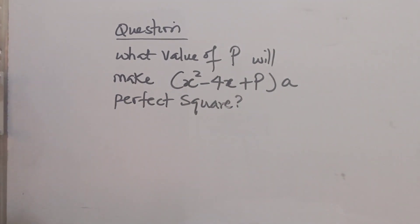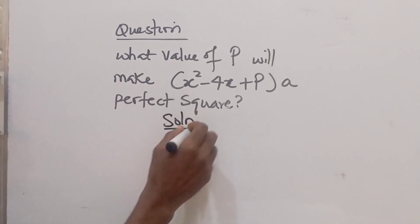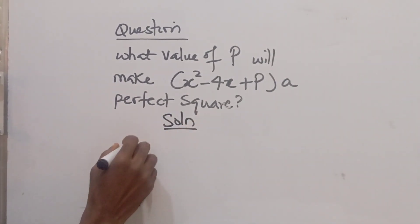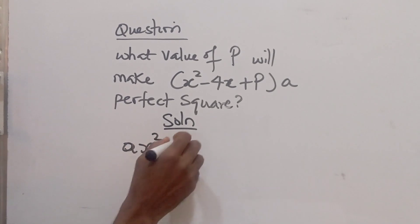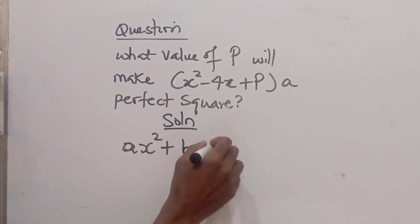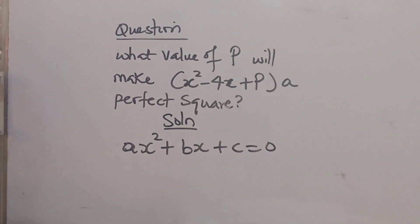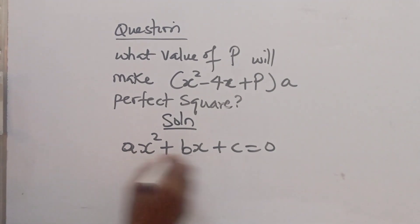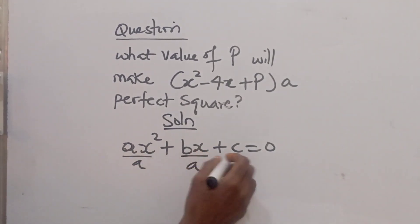Now the idea of quadratic equation is if I have a solution to it, if I have say ax squared plus bx plus c is equal to 0. Of course we know that if we divide through by a we have this.